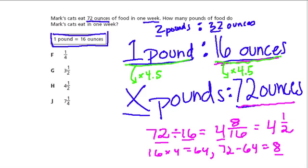That makes sense. Every group of 16 ounces gave us 1 pound, so if we have 4 and a half groups of 16 ounces, we have 4 and a half pounds. The answer is H.